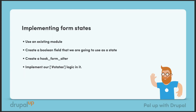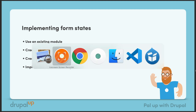In this video we're going to be implementing form states. Form states allow us to conditionally show form fields. We're going to be using an already created module, we're going to create a boolean field that we'll use as a state, and we're going to implement hook_form_alter and implement the states logic there.